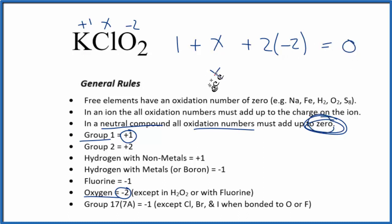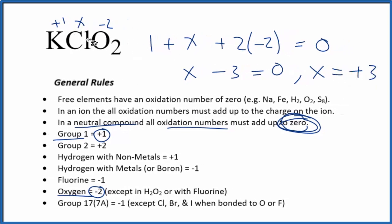So X minus three equals zero, so X has to equal a positive three. And that's the oxidation number for the Cl in KClO2.